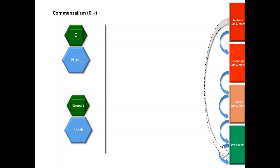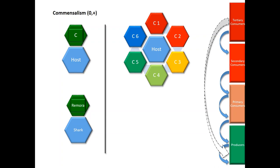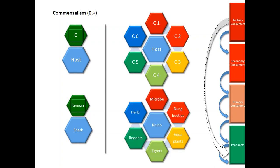Commensalism can happen between one host and multiple commensals. The example I can cite is a rhino and so many commensals surviving with rhino. Rhino excreta doesn't go to waste. There are dung beetles who feed on the dung. They convert complex dung matter into the simplest organic matter which can be recycled back into the ecosystem.